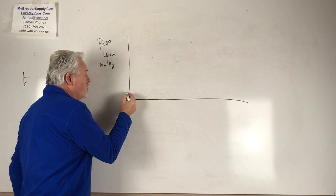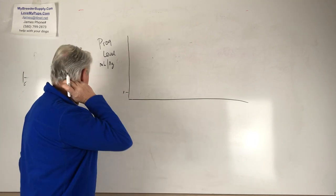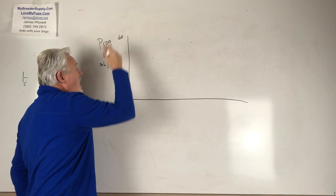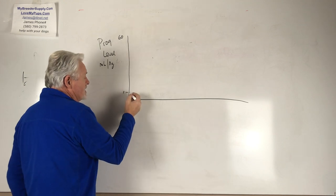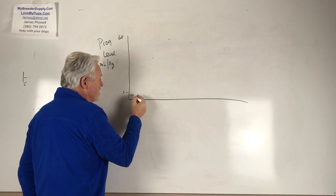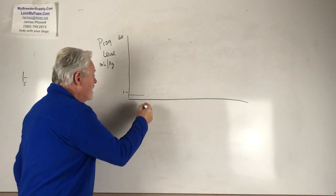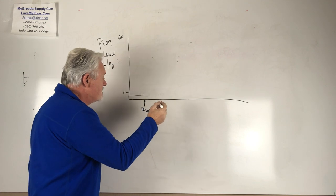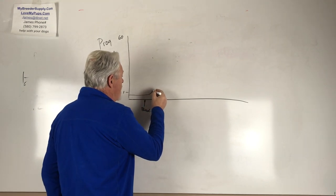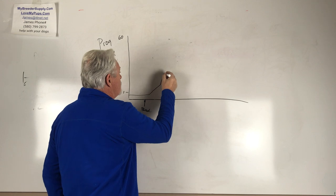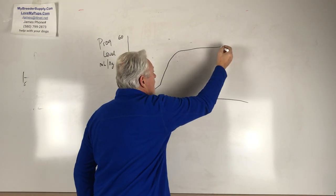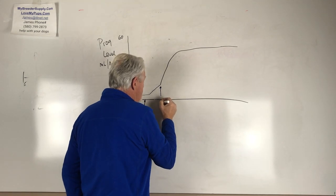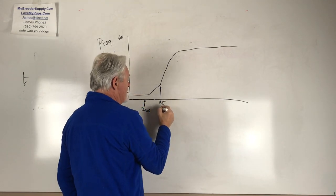Typically we measure that in nanograms per milliliter, and a dog that's not in heat at all will have a number that's less than one, and a dog that goes into heat will eventually have a number that's high, maybe as high as 60. So what happens is this dog that's not in heat is rocking along at a number that's less than one, and then it starts to produce drops of blood, and that's the first day of its heat. Then its progesterone level takes a slow rise, then a really rapid rise, and that dog then stays at a high progesterone level.